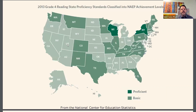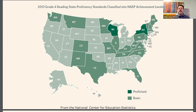Fourth grade reading declines were not as bad as math, with Virginia at negative 10, followed by Delaware at negative 9, and DC, Idaho, Oklahoma, and West Virginia at negative 8 each. Keep in mind that these are decline numbers, not scores, with some states starting with pretty low numbers from 2019. Nonetheless, the 2022 fourth grade reading scores were on average the lowest scores we've seen since 2015.